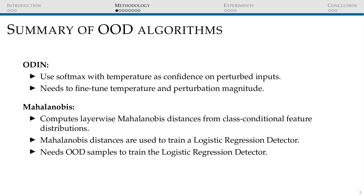In brief, we may summarize ODIN and Mahalanobis methods as follows. First, ODIN uses softmax with temperature scaling as confidence on perturbed inputs. It means the method looks at the model's last layer. It also needs to fine-tune the temperature and perturbation in order to detect the OOD samples, and it requires access to out-of-distribution samples in order to work.